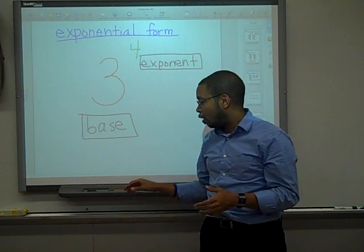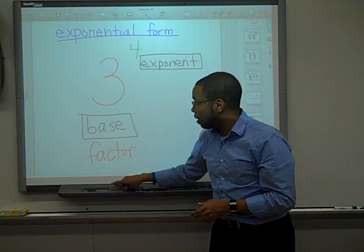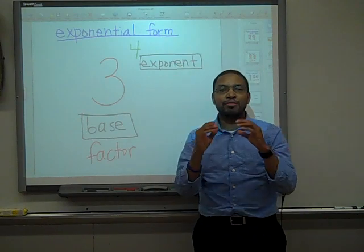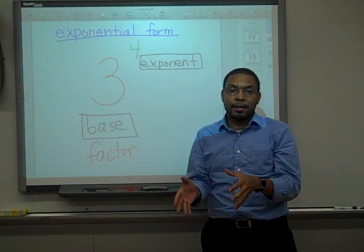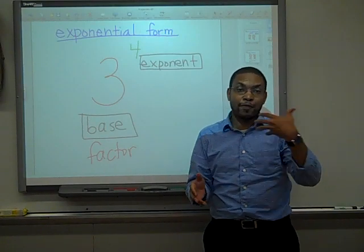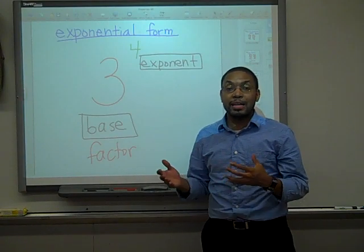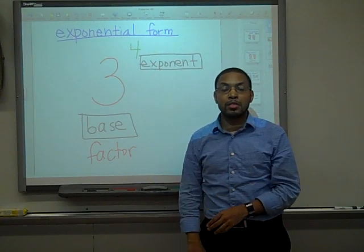Now the base is what we call the factor, so it's the number that we will multiply by. And the exponent basically gives directions to the base. It tells the base how many times to be written as a factor. The exponent tells you how many times to write the base as a factor, and a factor is the number used in multiplication.